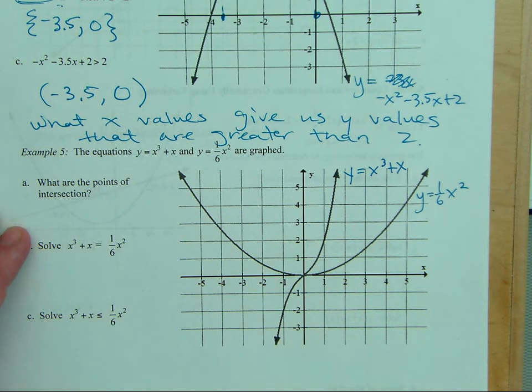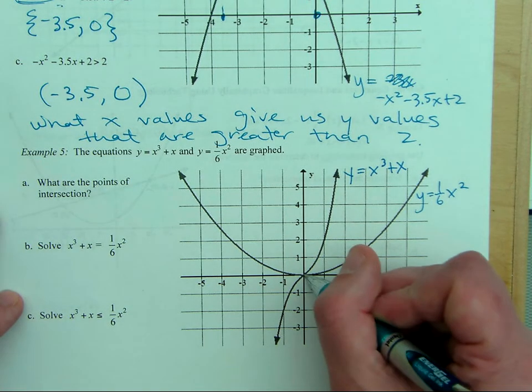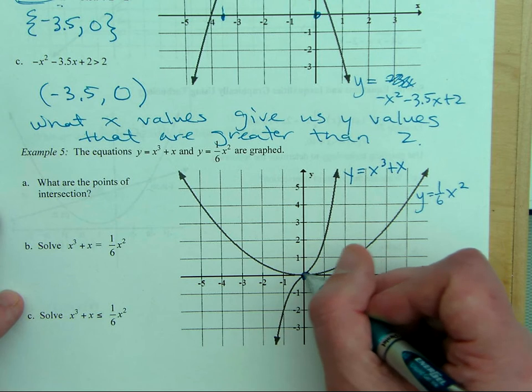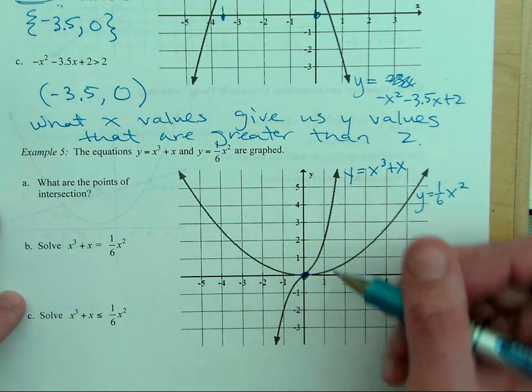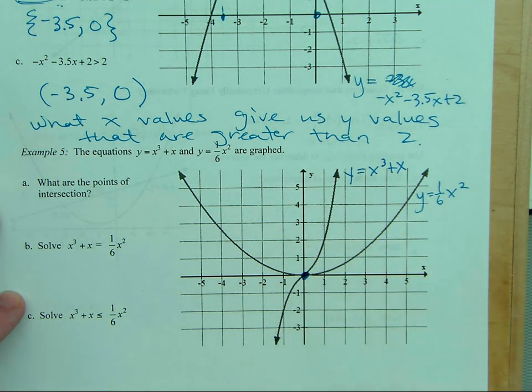So, the first thing we want to identify is the point of intersection. Where does one graph cross the other? And it'd be nice if these were in two different colors, right? If I had printed them in color. And then, so the point of intersection looks like it's just 0, 0. Yeah? 0, 0.